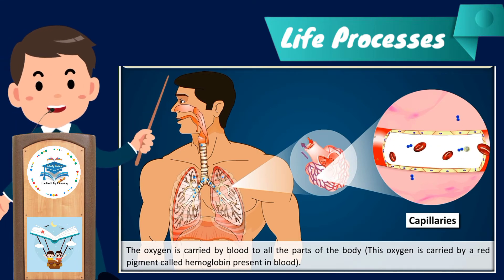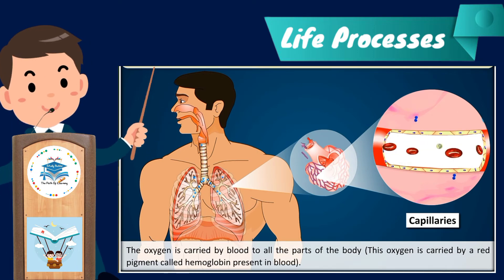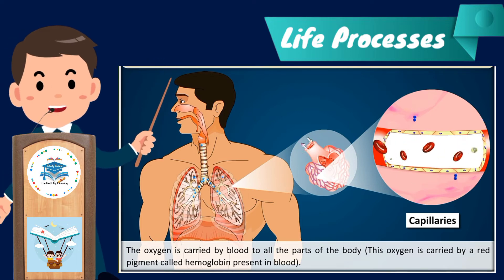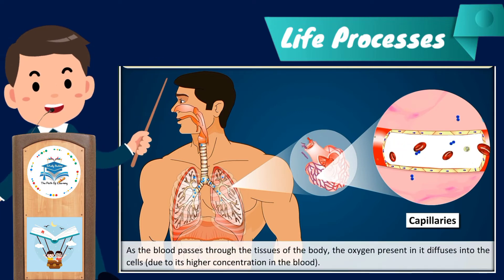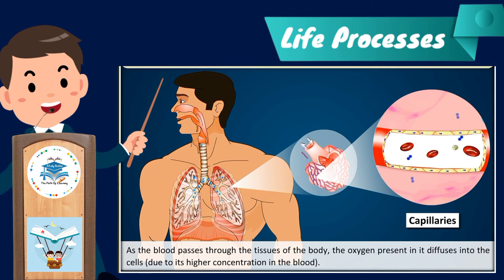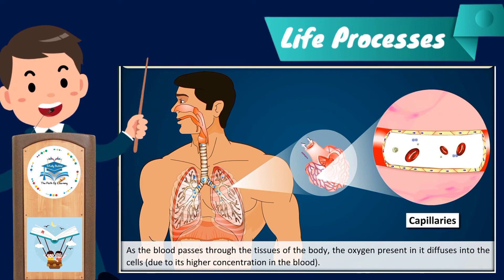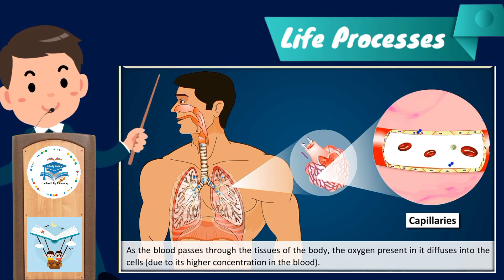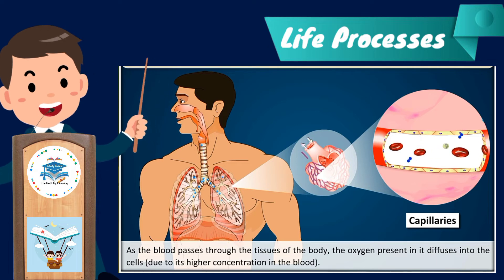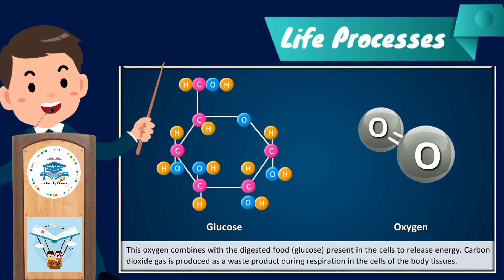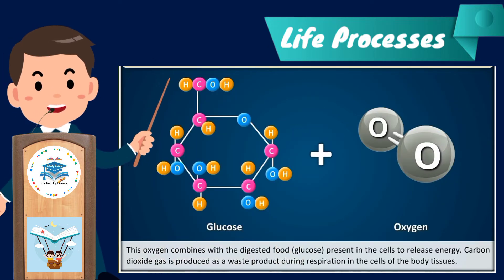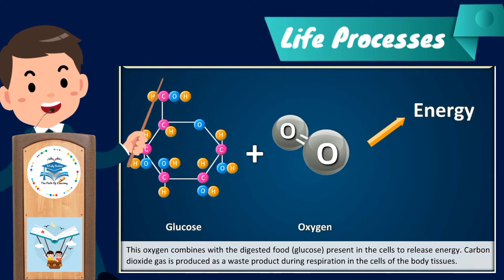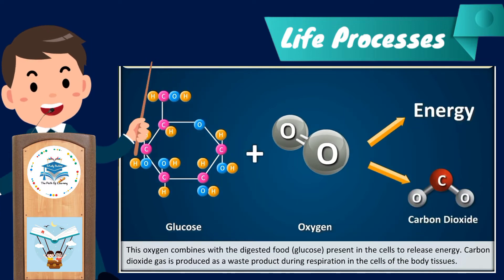Oxygen is carried by blood to all parts of the body via a red pigment called hemoglobin present in the blood. As blood passes through the tissues, the oxygen diffuses into the cells due to its higher concentration in the blood. This oxygen combines with digested food (glucose) present in the cells to release energy.